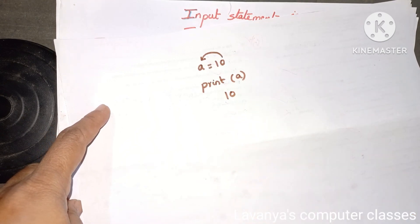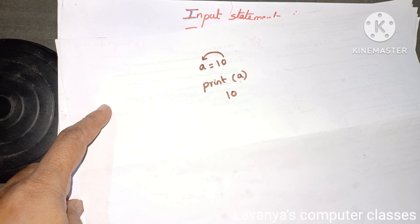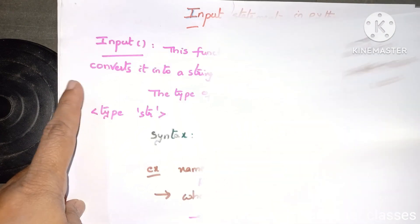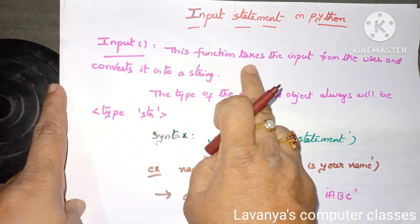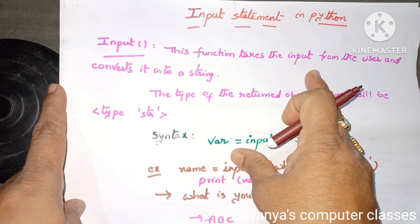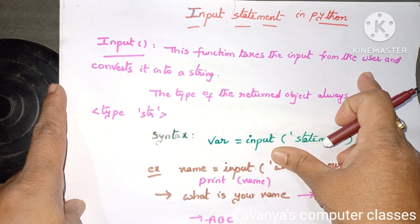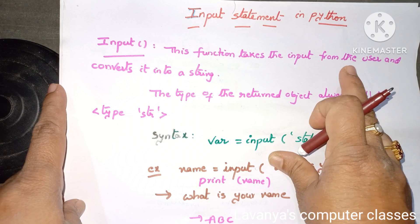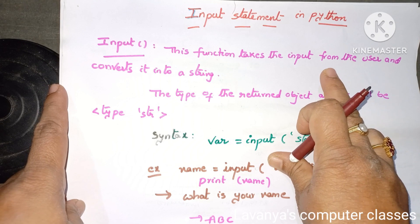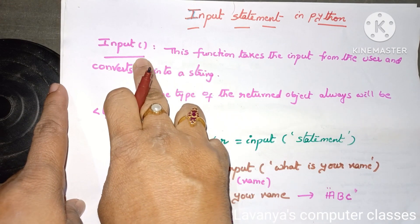But any time we are executing this statement any number of times, the value of a is 10 only. If I want to give some values to any variable at runtime, then we have to go for the input function. The input function takes input from the user. Whenever the program is executed at runtime and the user wants to give any values to a variable, we use the input function.